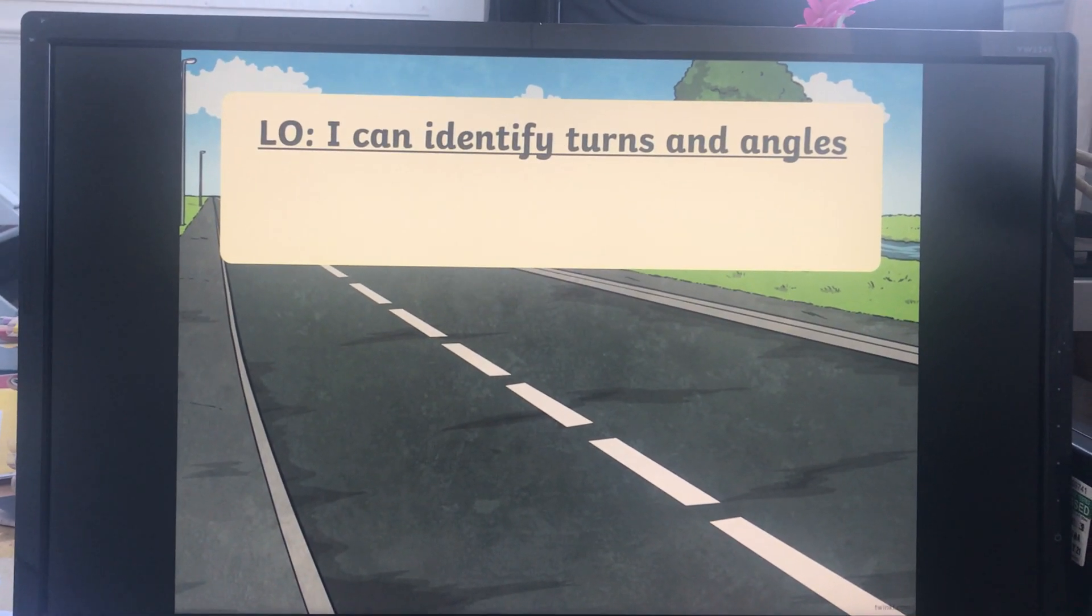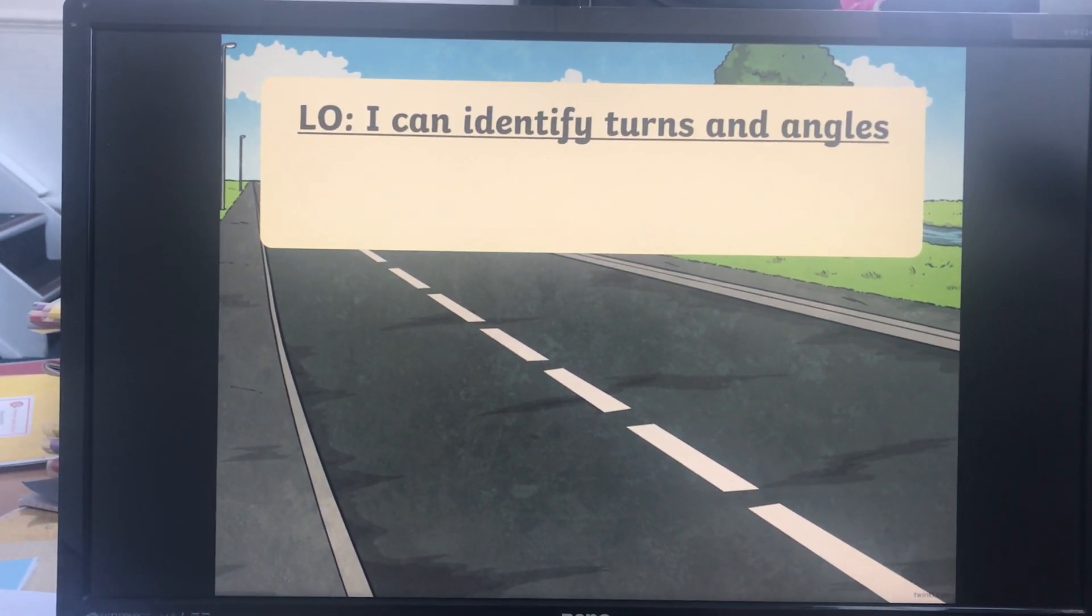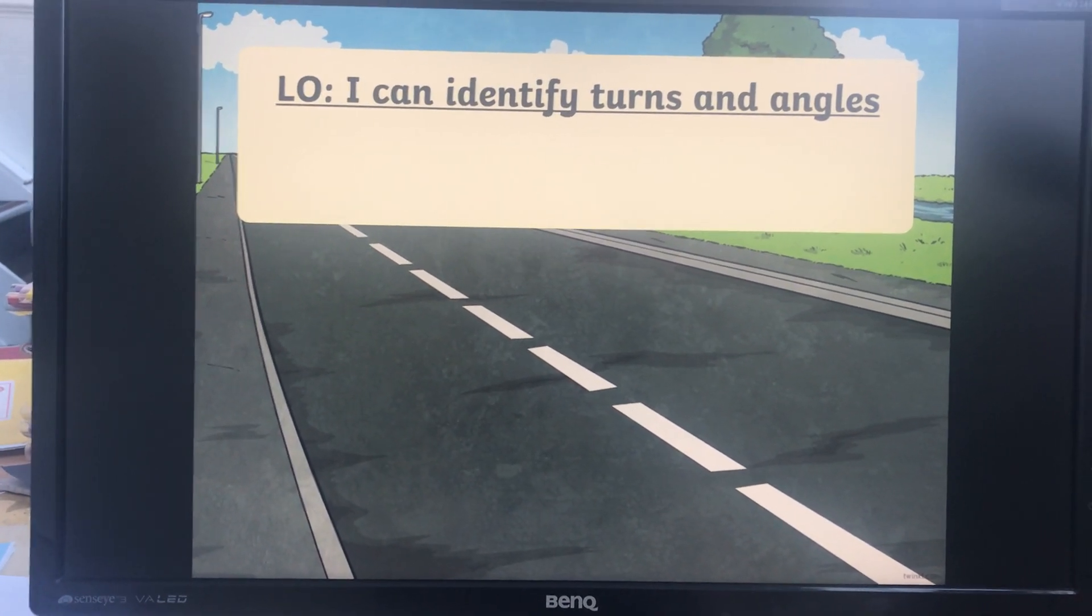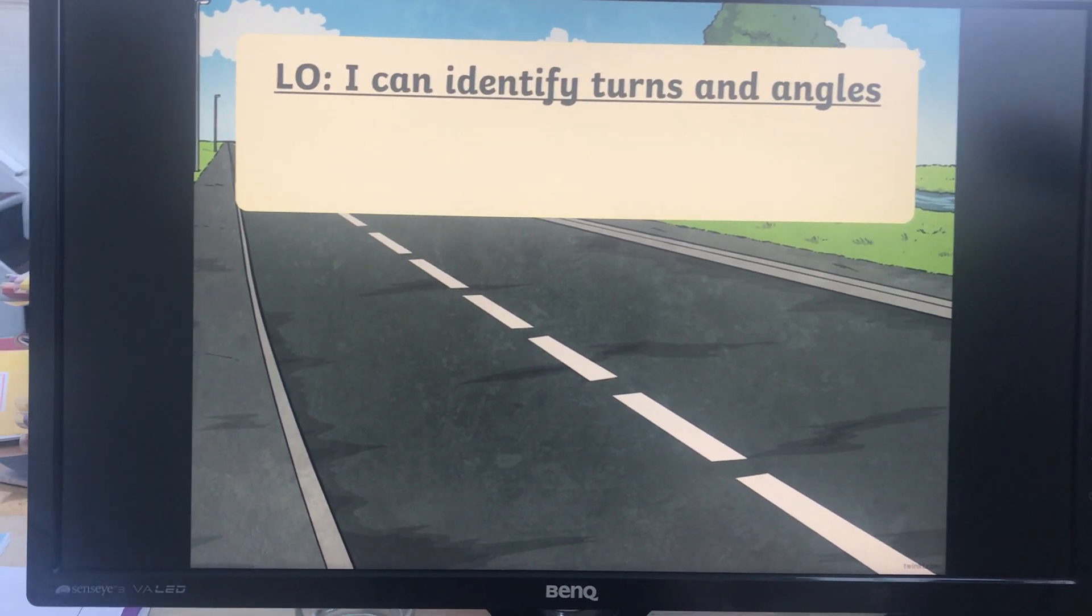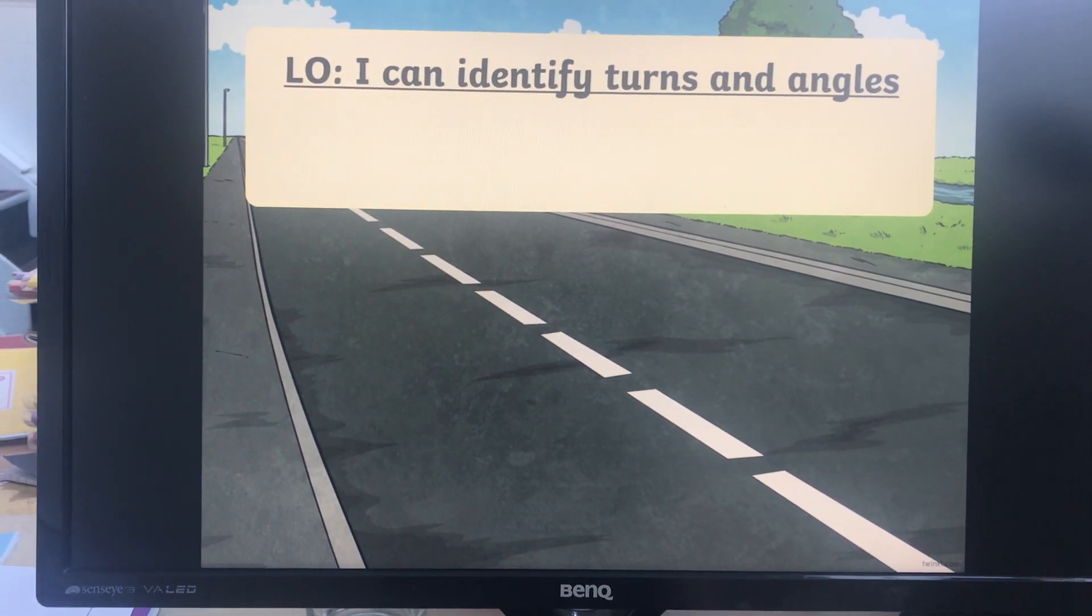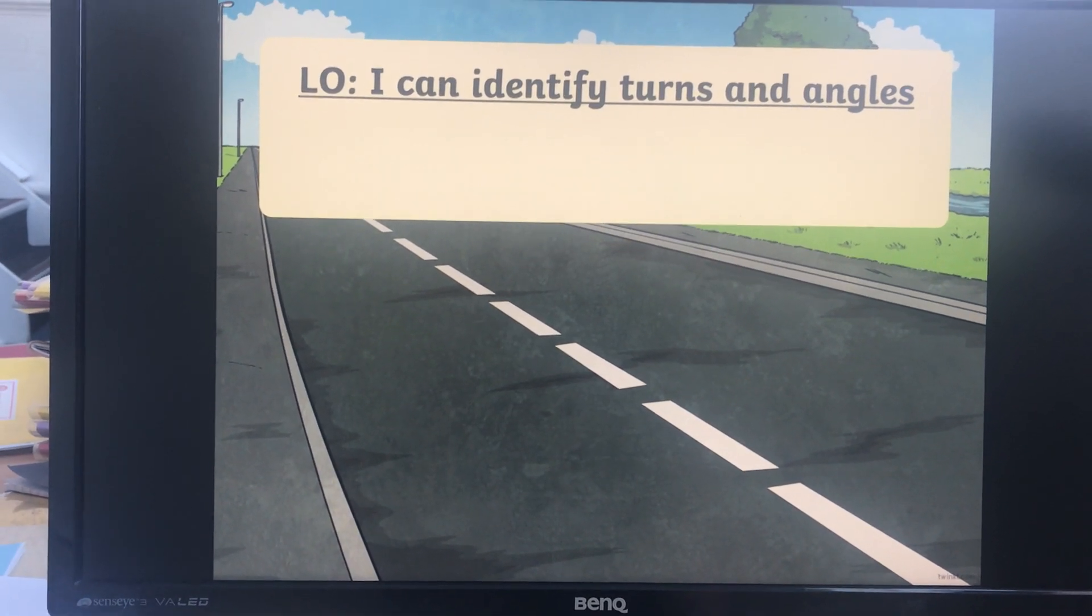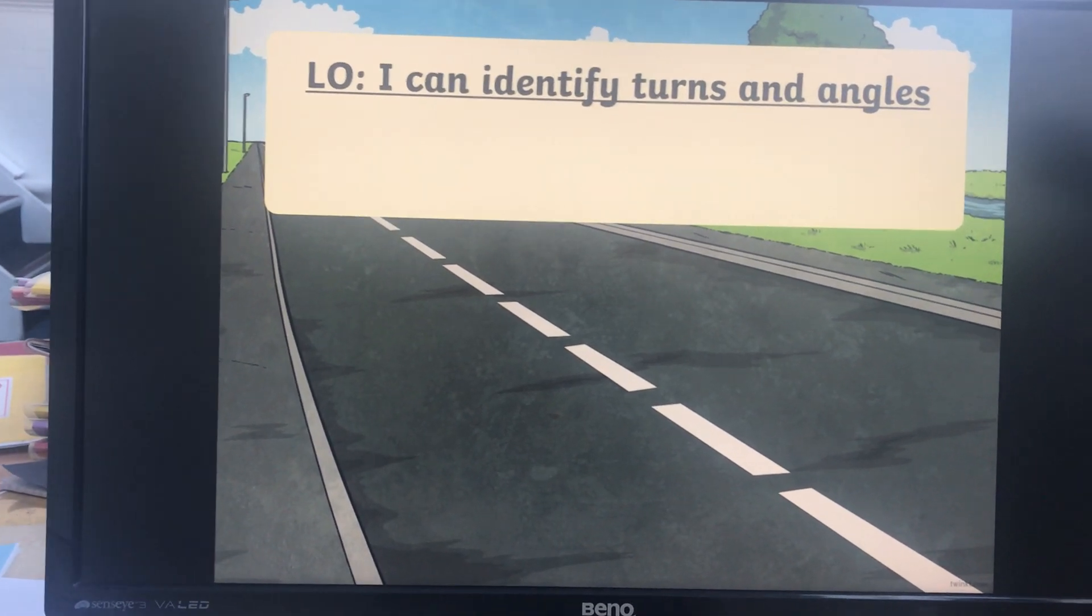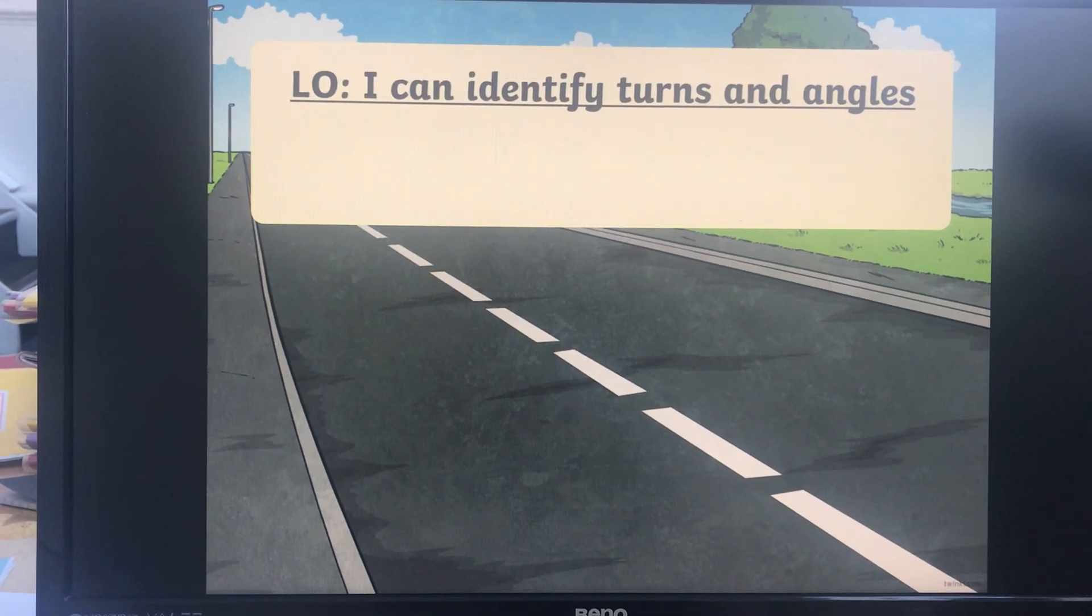For all of this week we are looking at properties of shapes, but not the actual 2D and 3D shapes themselves yet. We'll get on to that next week. This week we are looking at turns and angles and also horizontal, vertical, parallel and perpendicular lines and how those factors make up properties of different shapes. Today we're just focusing on turns and angles.